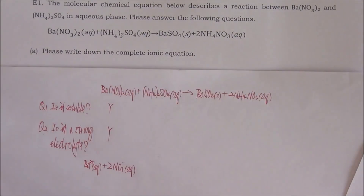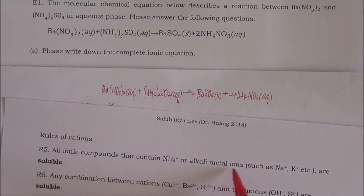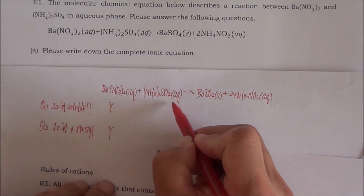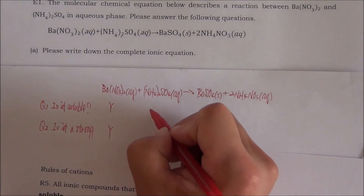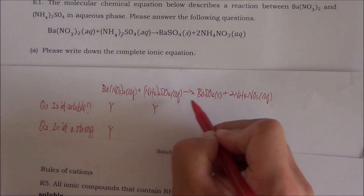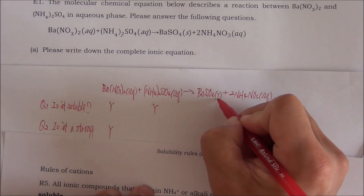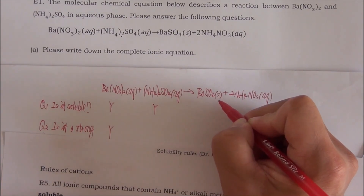Now let's look at the second compound: ammonium sulfate. Rule number five states that all ionic compounds containing ammonium or alkali metal ions are soluble. Ammonium sulfate does contain ammonium ion, so the answer to question number one is yes. Also, if you are given the state of the chemical: if it says aqueous, it is soluble; if it says solid (S), liquid (L), or gas (G), it is insoluble.